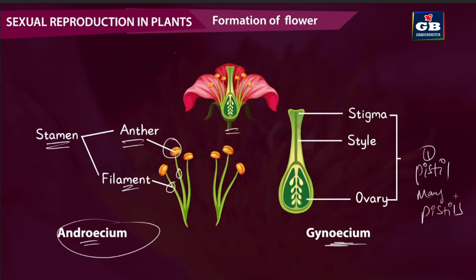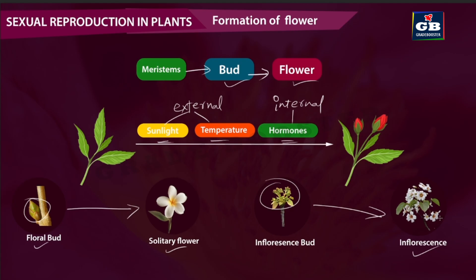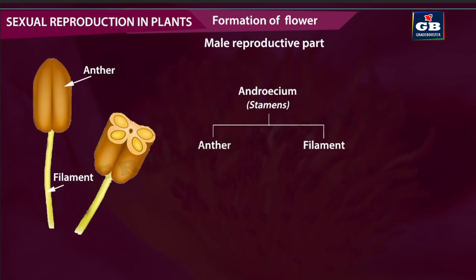Let us see the parts of the pistil. The top of the pistil is the stigma. The long tube that extends downwards is the style. At the bottom it has the ovary, and inside are the ovules. This is the female reproductive part of the flower.